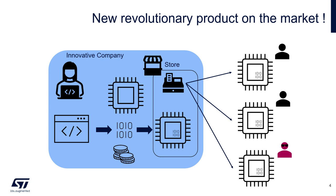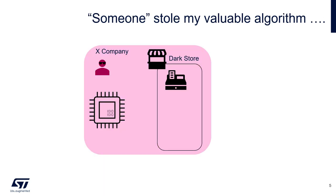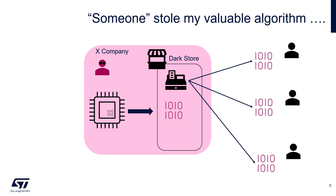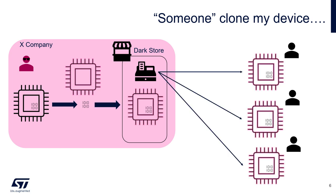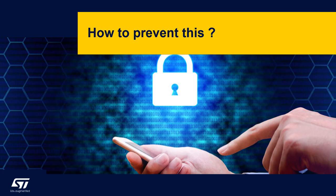But a drawback of this success is that some hackers start to take a deeper look at this product. The hackers managed to find some security weaknesses, and exploiting them, they were able to extract the valuable data or algorithms, then sell this information on the dark web. So our innovative company lost all its investment in research and development. Additionally, if the hacker has some production capabilities, he can produce clone devices and sell them, destroying all the market of our innovative company. The question now is: how to address this problematic of confidentiality and cloning?